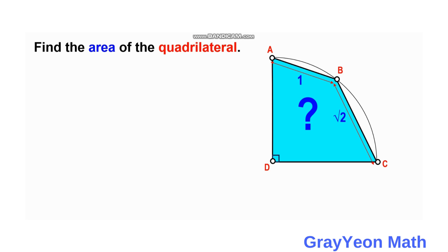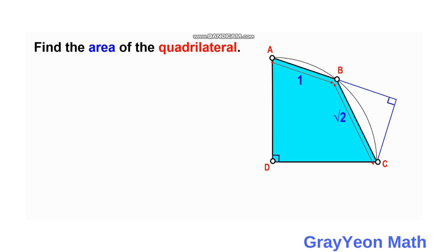One approach is to focus on the √2 unit segment BC. We extend AB and draw another segment that is perpendicular to the extension, going to point C. We label this perpendicular foot as point E.